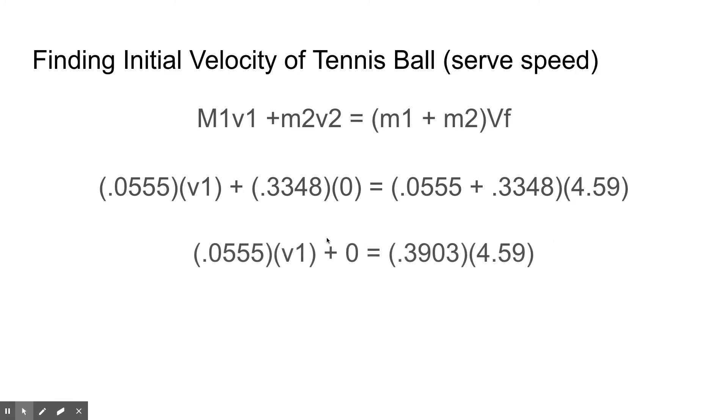As you can see, this value becomes zero because the box was initially at rest. Then we can calculate for v initial which is 32 meters per second, but that doesn't make any sense in our eyes. Let's put some reference into it.